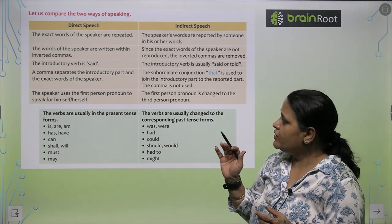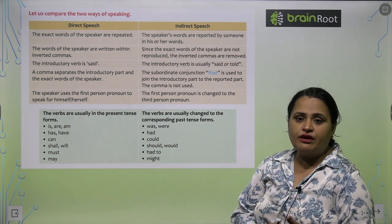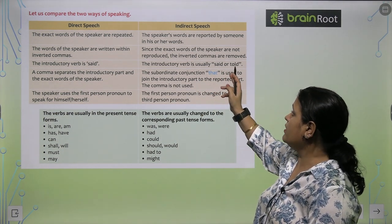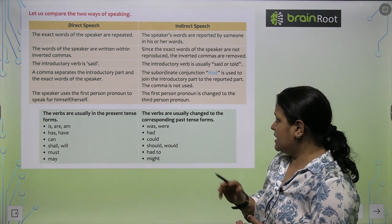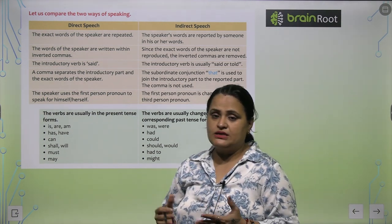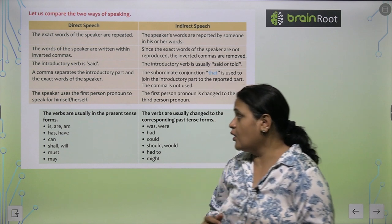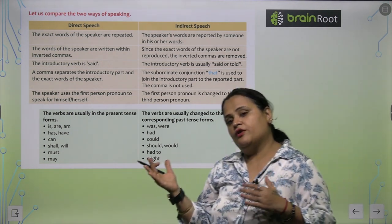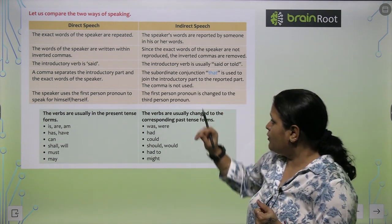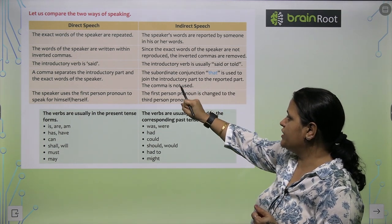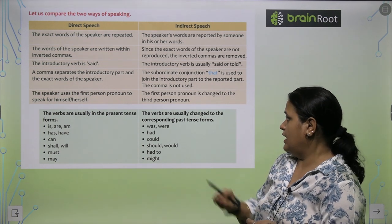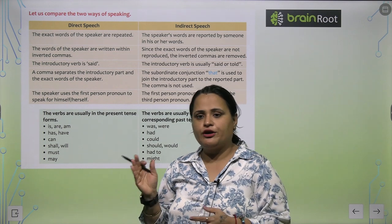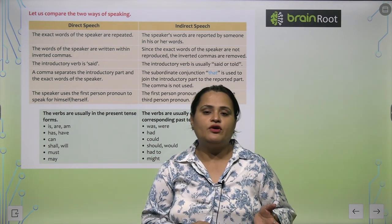The introductory verb is 'said.' The introductory verb is usually 'said' or 'told' — I will tell you the difference later. A comma separates the introductory part and the exact words of the speaker. The subordinate conjunction 'that' is used to join the introductory part to the reported part. Here is the introductory part, and here are the exact words of the speaker.